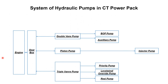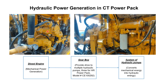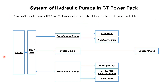The core of the hydraulic power generation in the power pack is the hydraulic pumps. The system of hydraulic pumps in the hydraulic power pack is composed of three drive stations — meaning three main pumps are installed. These three pumps are: a double vane pump, a piston pump, and a triple vane pump.